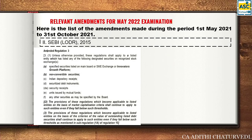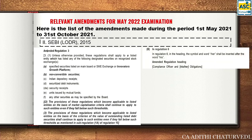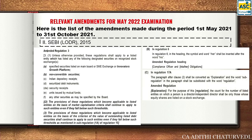The amended Regulation 3 now reads: unless otherwise provided, these regulations shall apply to a listed entity which has listed any designated securities — including Innovators Growth Platform and non-convertible securities — on a recognized stock exchange. In Regulation 6, the heading shall have 'her' inserted after 'his': 'Compliance Officer and his/her obligations' — because earlier it was only 'his obligation'. An explanation is also inserted after Clause 2 for this regulation, and the word 'sub-regulation' in that paragraph shall be substituted with 'regulation'.